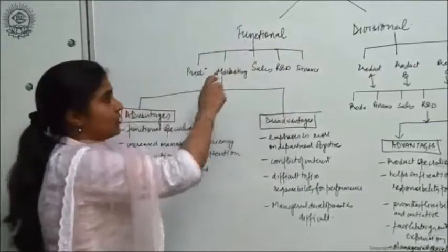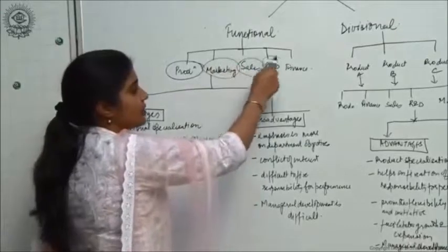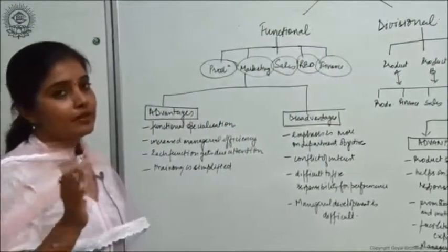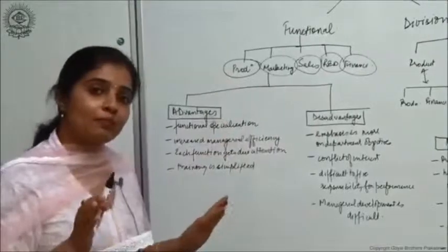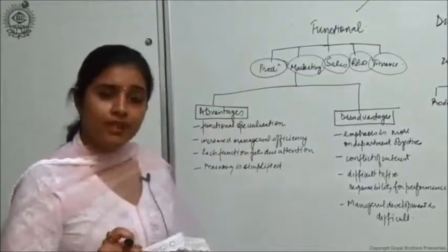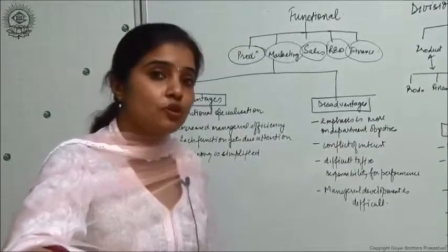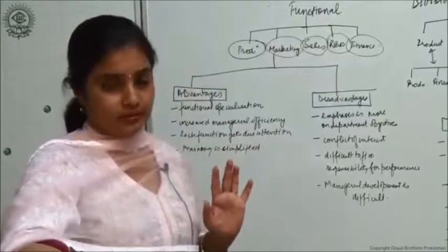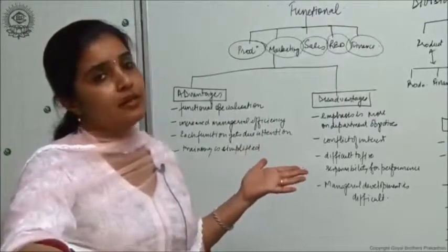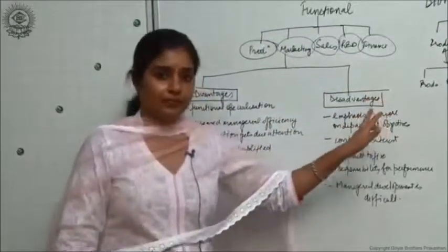In a functional structure, there is a production department, a marketing department, a sales department, a research and development department, and a finance department. All of these functions work as separate departments with their own departmental objectives. This is an ideal structure when the scale of the organization is medium or small and when they have only one product for which these functions are performed.